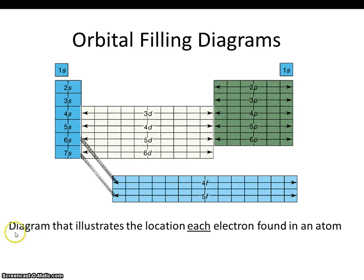An orbital filling diagram is nothing more than a diagram that illustrates the location of each electron found in an atom.